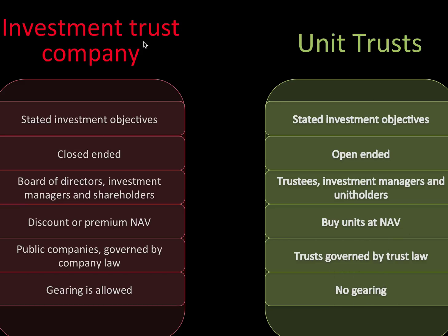An investment trust company is kind of like a company where you take your money to invest in — it might be a branch of a bank, or a group of accountants acting as money managers. Whereas a unit trust could be with a life insurance company as part of your savings component. That's why unit trusts are normally less risky and that's why there's no gearing. But these are just very broad categories, and we'll see later how you can blend the two together.